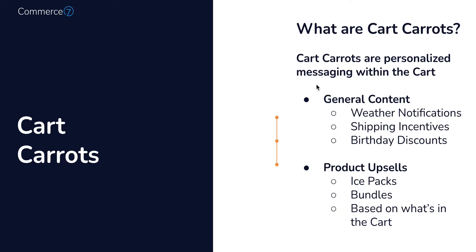There are a couple of different kinds of cart carrots. One is the general content carrot — things like weather notifications, shipping incentives, or discounts for a particular birthday month. Then there are the product upsell carrots, where you're trying to upsell whatever is already in the cart — things like ice packs, bundles based on a SKU purchased in the past, or a product upsell based on what's already in their cart.